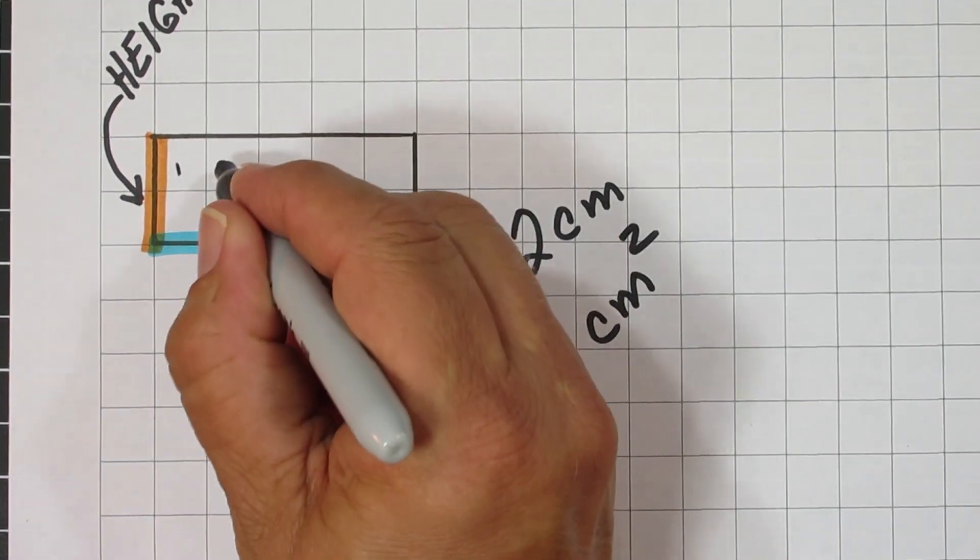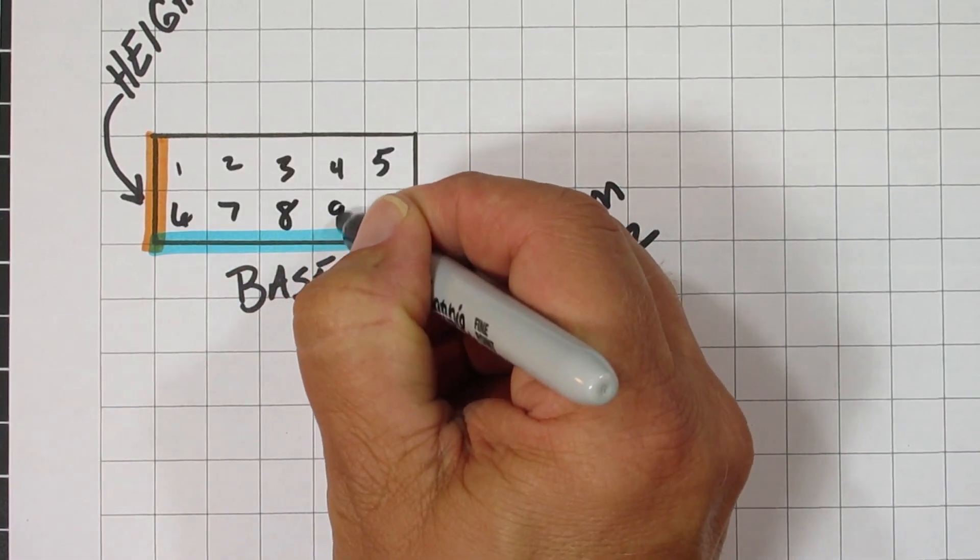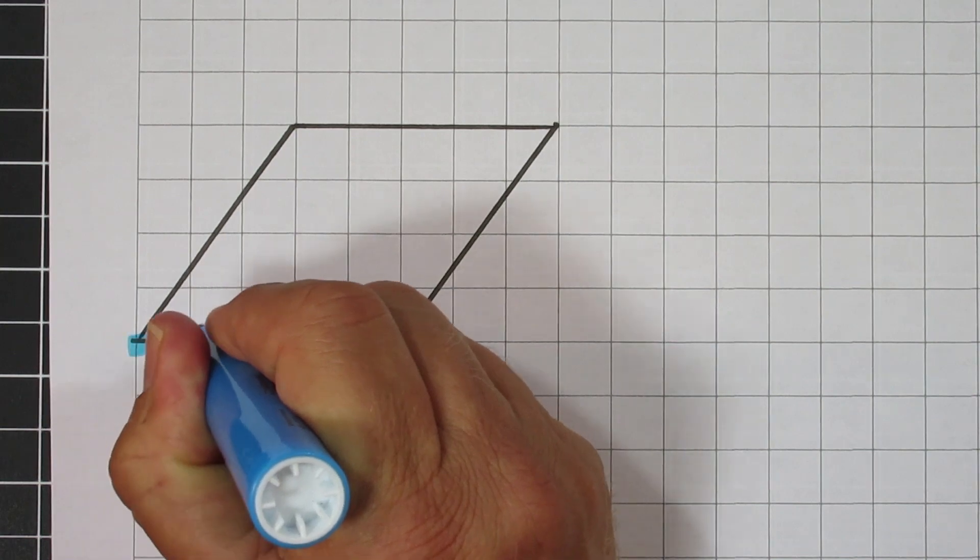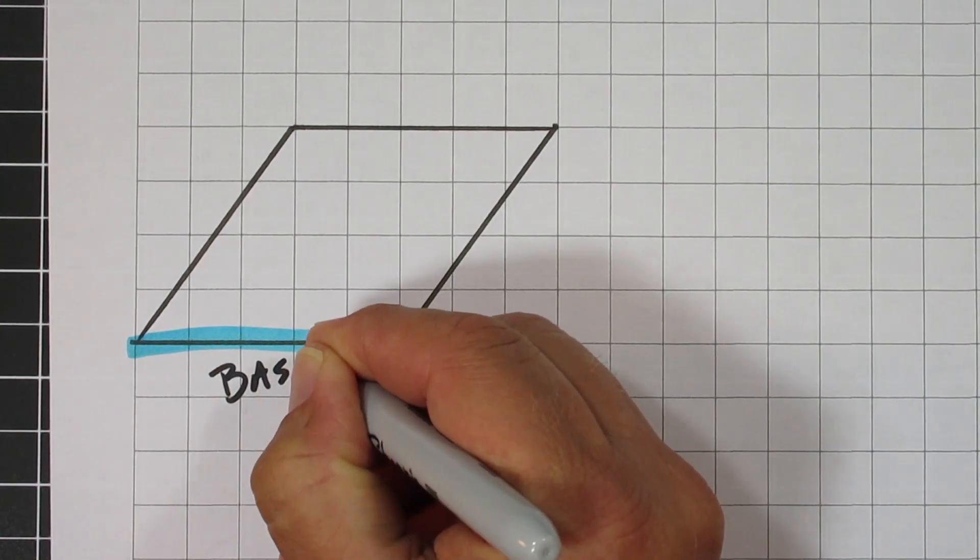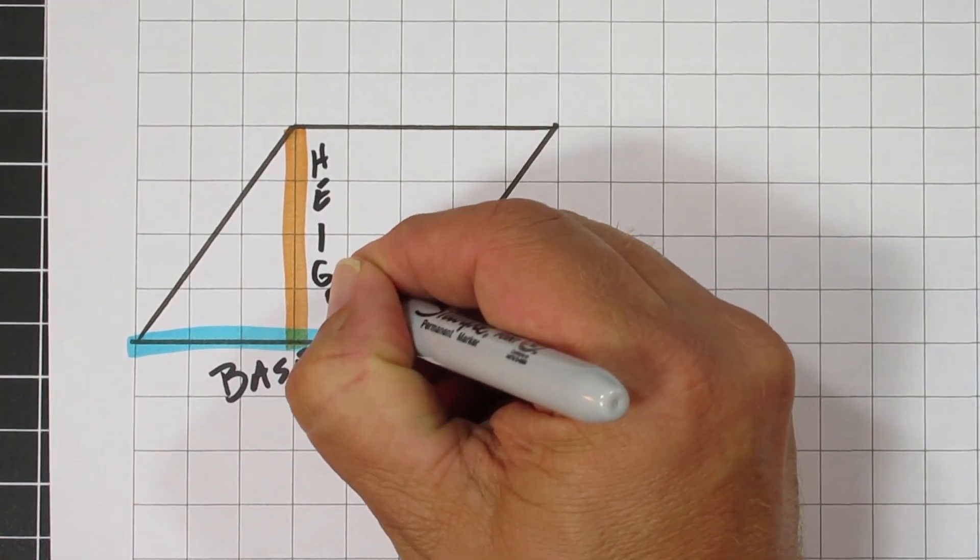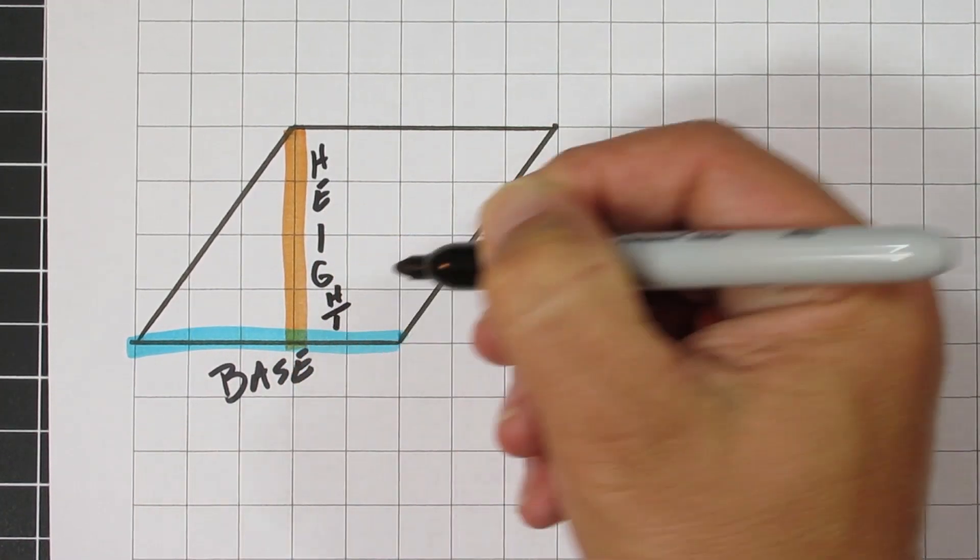The same formula of base times height is also going to work. We talked about this rhombus. This rhombus right here has a base of 5 centimeters, has a height of 4 centimeters. If we take our base of 5 times our height of 4, we get 20 centimeters squared.